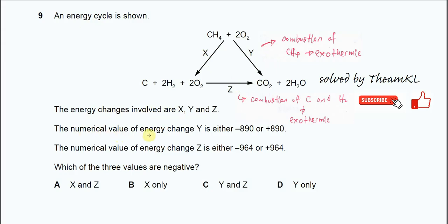The numerical value of energy change Y is either negative 890 or positive 890. We need to know what is the reaction that involves Y. It's from methane with oxygen to form CO2 and H2O. This is the combustion of methane. Combustion is always exothermic, so we are quite sure the enthalpy Y is negative.